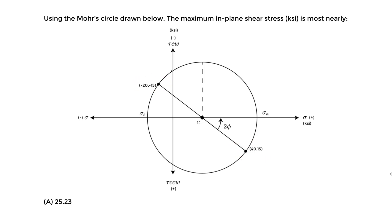This first point has a corresponding sigma x — the normal stress — and tau xy. So this 40 is our sigma x and this is tau xy. The other point represents sigma y, which is negative 20, and this is still tau xy with a value of 15.